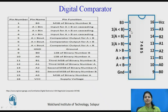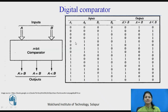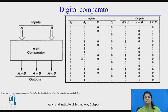The pin diagram is shown from pin 1 to 16, with each pin number and its functionality described. The truth table of the digital comparator is shown. For example, when A is 00 and B is 00, A equals B, so the A-equal-to-B output is 1. When A is 10 and B is 0, A is greater, so the A-greater-than-B output is active.